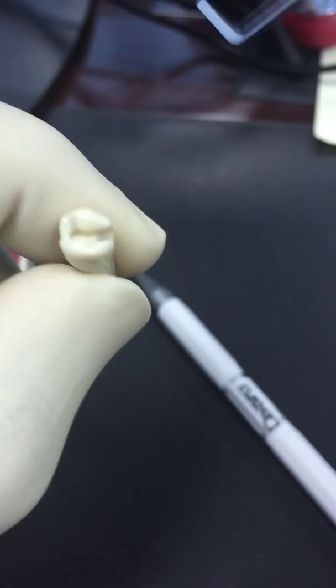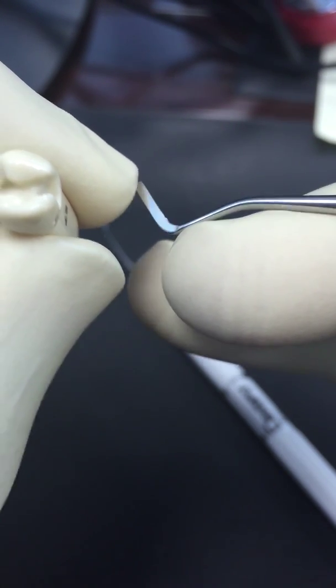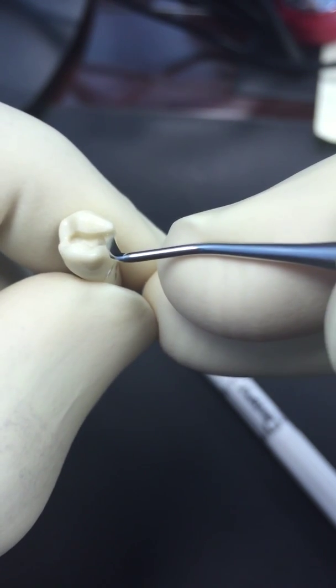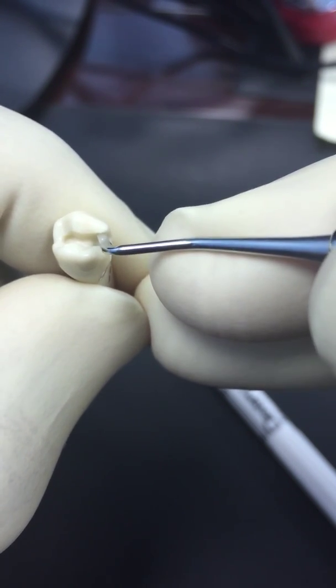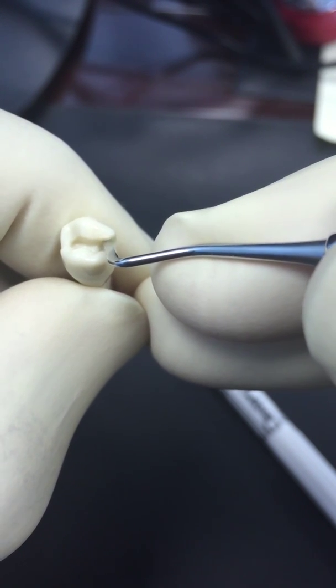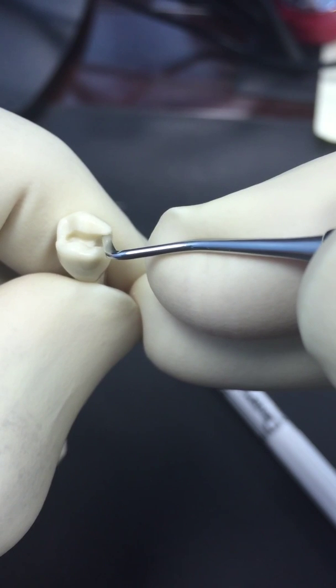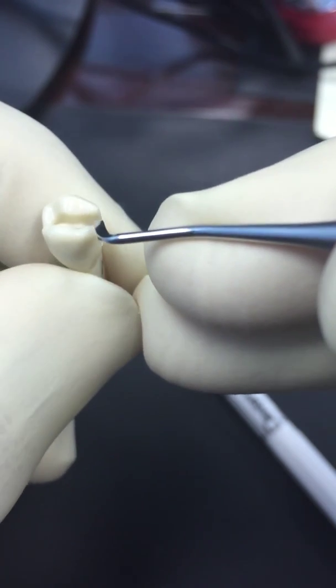Put it parallel to the wall that you are cutting. Put it from inside, just below the occlusal surface of the tooth, just below the occlusal.